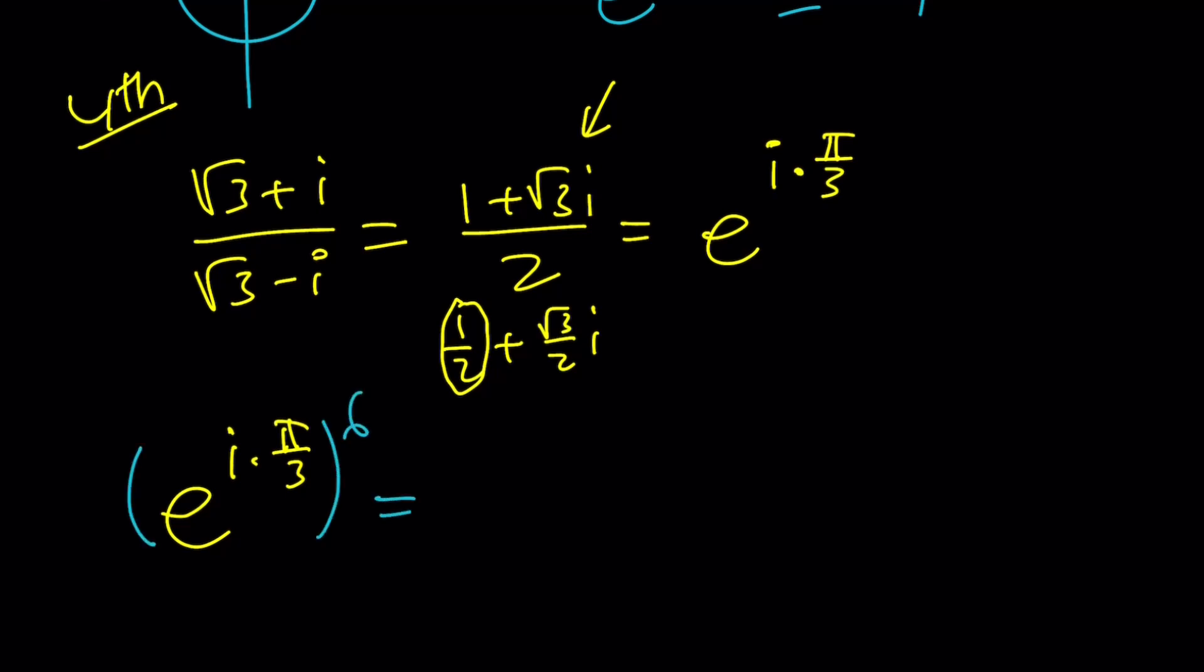So I'm going to raise e to the power i pi over 3 to the sixth power. By way of multiplication, it's super easy. e to the power i times 2 pi. Or you can write it as e to the power 2 pi i. Or you can write it as 1, which is the answer. And this brings us to the end of this video.